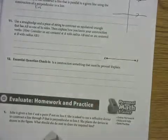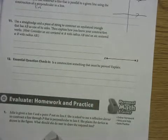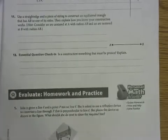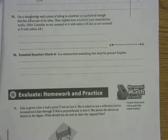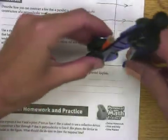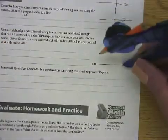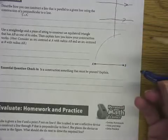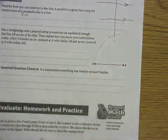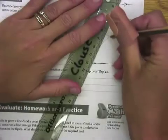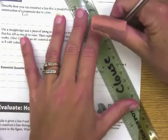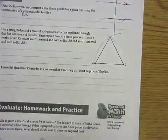Last thing I want to talk about is this question 11 where it's asking to use a straight edge and compass to construct an equilateral triangle that has AB as one of its sides. We've talked about constructing triangles with given side lengths before. If I want my triangle to have this as its side length, I can make an arc to indicate the length of side AB somewhere out here, and it's going to intersect with the arc from A. When I connect these dots, this is an equilateral triangle.